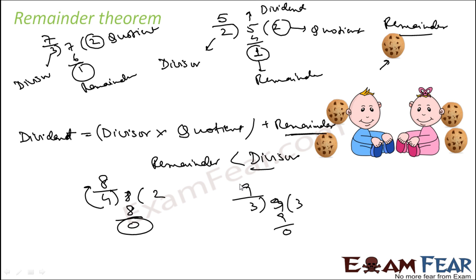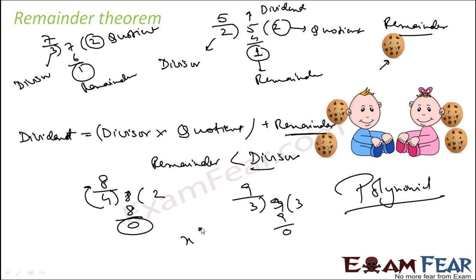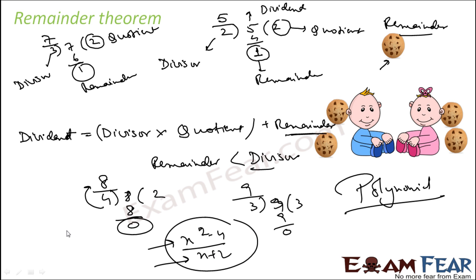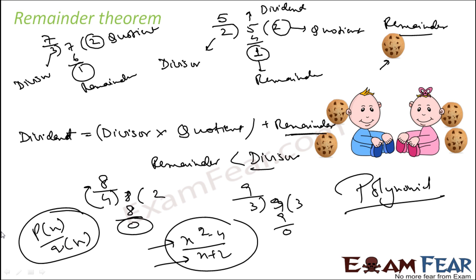So this is division of numbers. The question is, since we are studying the chapter on polynomials, can I divide two polynomials? For example, can I divide x squared minus four by another polynomial? Can I divide p(x) by q(x)? That is the question.